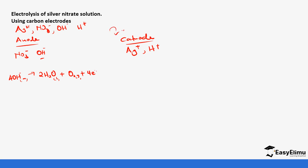At the cathode we have silver and hydrogen ions. Silver is below hydrogen in the electrochemical series at +0.80 V, while hydrogen is 0.00 V, so silver is more positive and will be preferred. Silver ions gain one electron at a time, so we balance to have four silver ions gaining four electrons to form four atoms of silver solid deposited at the cathode. The OH⁻ ions and silver ions are being used up, so the solution becomes acidic over time because the remaining nitrate ions react with the hydrogen ions to form nitric acid.